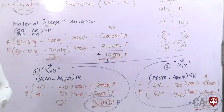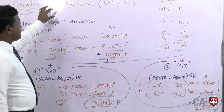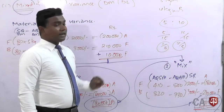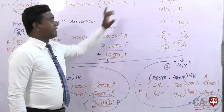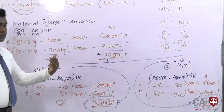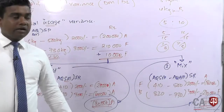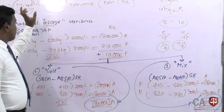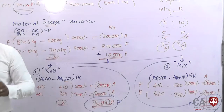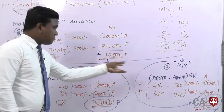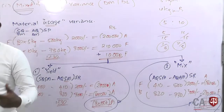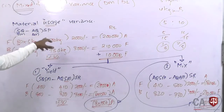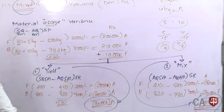The mix and yield variance is basically calculated for material and labor. For costs, mix and yield arises when you use more than one item of material or labor. It is the bifurcation of the material usage variance and the labor efficiency variance. Therefore, the sum of yield and mix variance equals the basic usage or efficiency variance. Let us have another example for labor now.